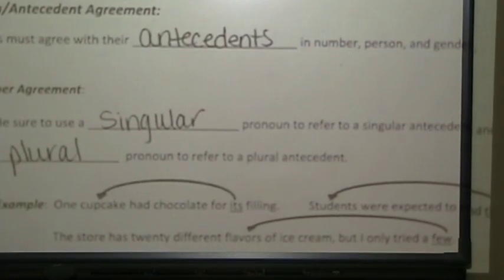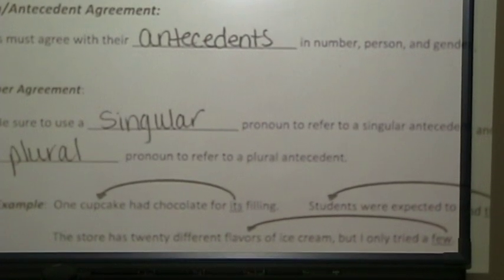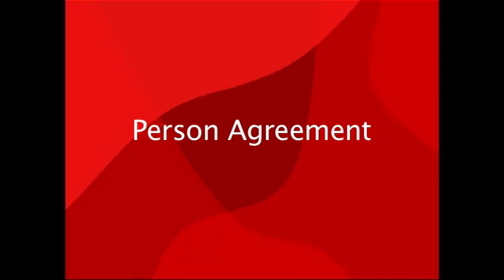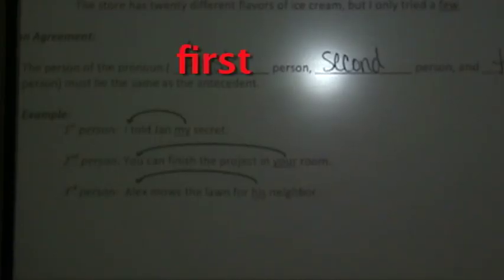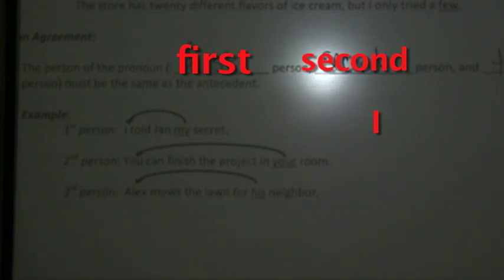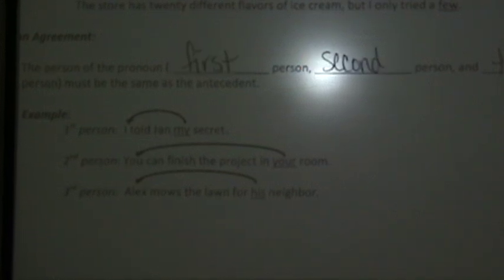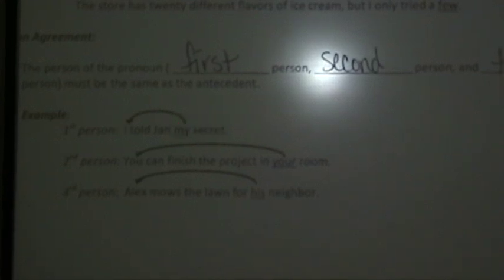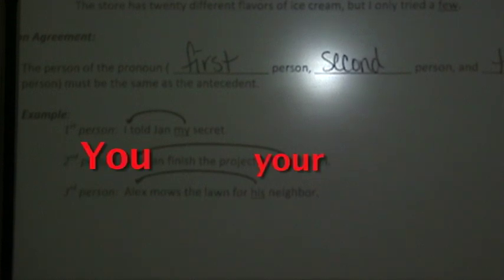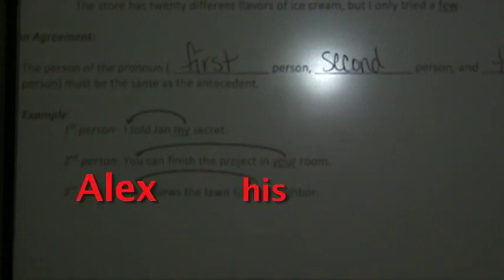The store has 20 different flavors of ice cream, but I only tried a few — few is talking about the different flavors. Now we're going to talk about person agreement. The person of the pronoun — first person, second person, and third person — must be the same as the antecedent. First person example: I told Jan my secret — my and I are both first person. Second person example: you can finish the project in your room — your and you are both second person. Third person example: Alex mows the lawn for his neighbor — his and Alex are both third person.